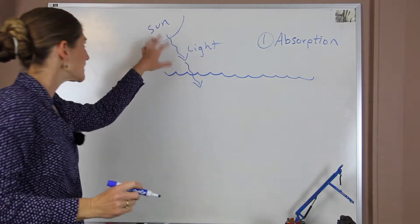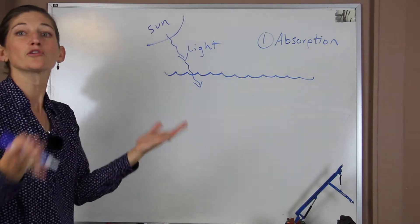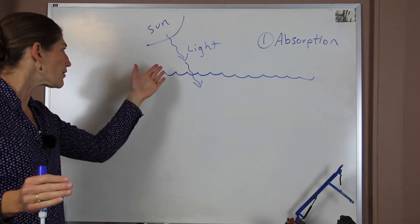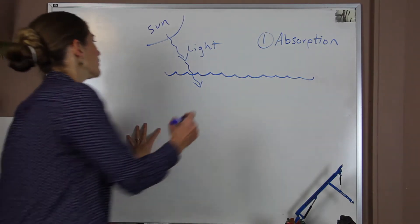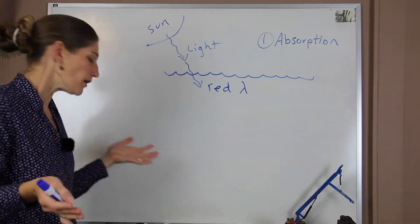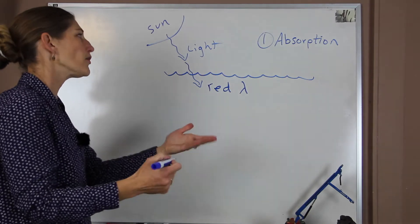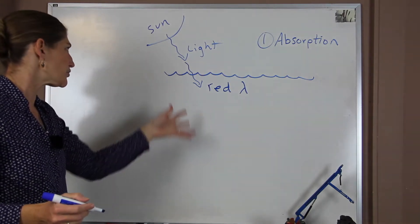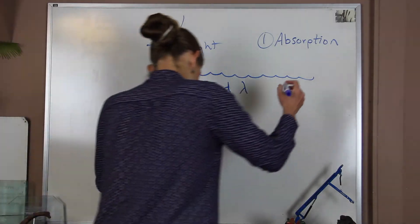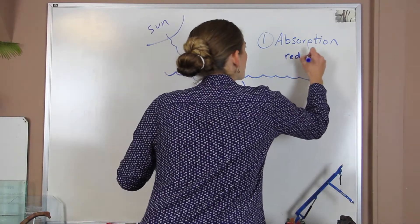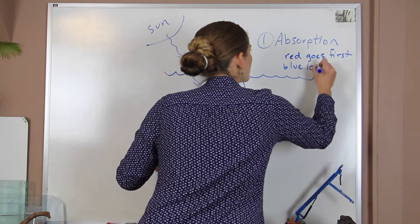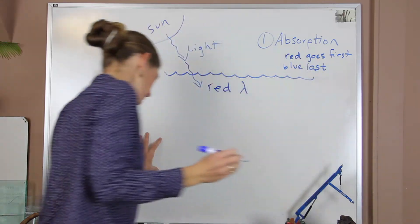And what happens is, light is split into a spectrum of colors. These colors are defined by their wavelengths, and different wavelengths are absorbed by the water at different depths. What we find out is, the red wavelengths are absorbed first. These are our longer wavelengths, and the blues are the last to be absorbed. So basically, as we start to absorb the red, what we're left behind with is the blue. So red goes first, and then blue is last. So that's the first thing.